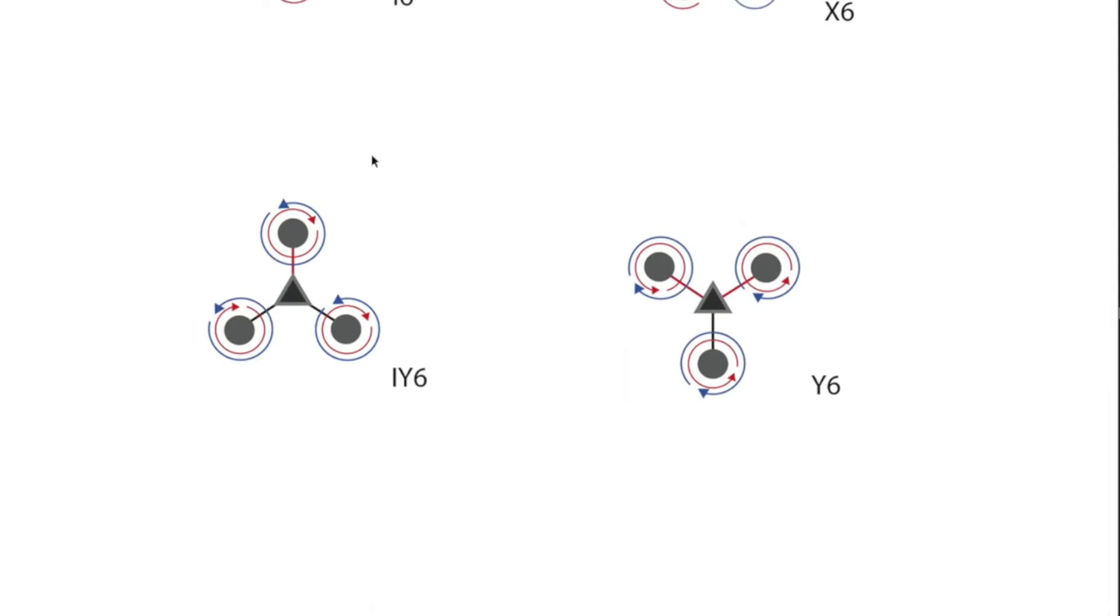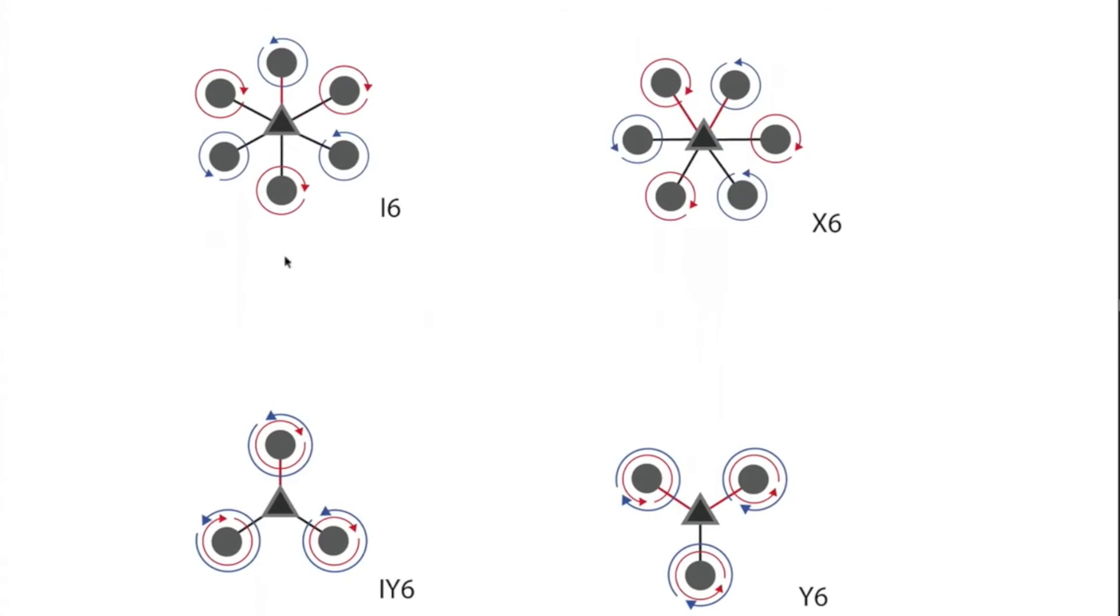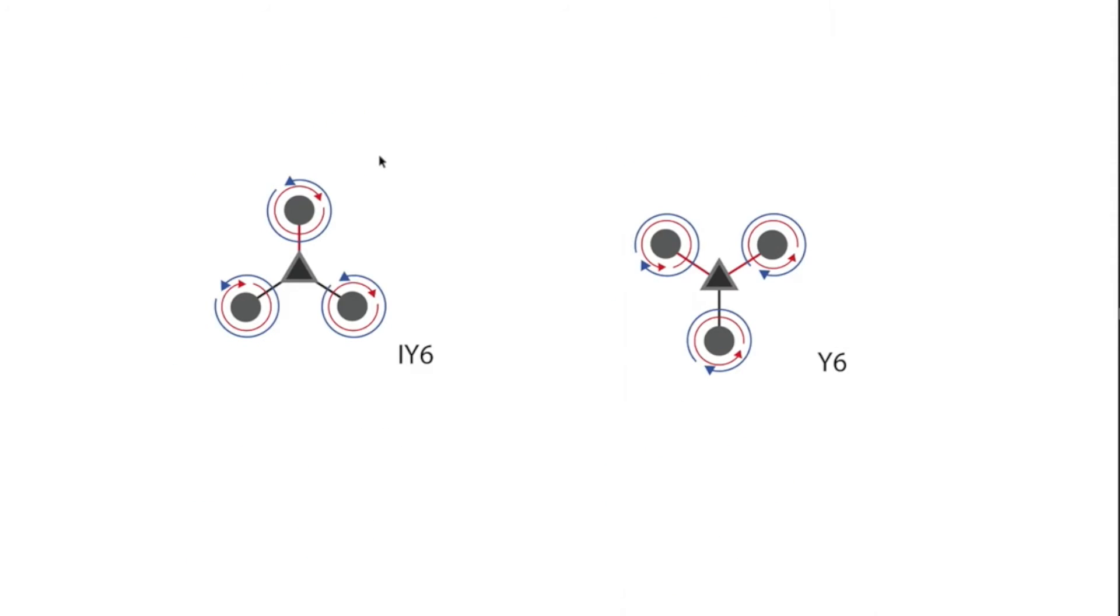The advantage of this is it's much more compact than the standard i6 configuration, so this is just another option. They call this an inverted or coaxial configuration where you have two motors per boom.